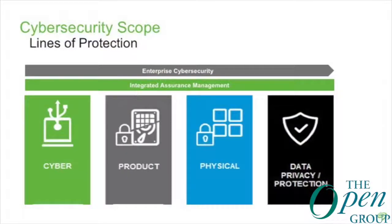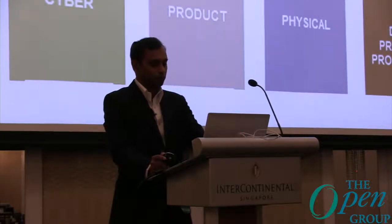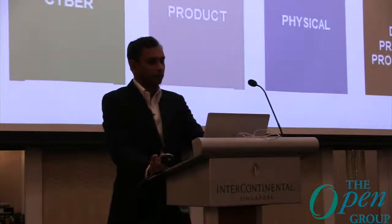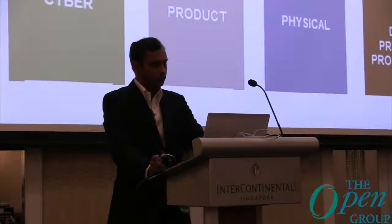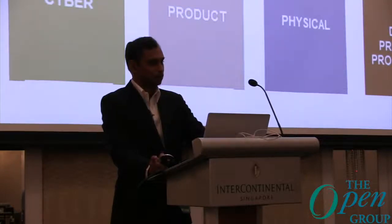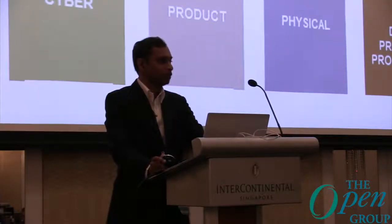To tackle this growing data challenge, we need to leverage enterprise security risk management spanning across four pillars: cyber, product, physical, and data privacy protection. Cyber and physical security are the top priority as they are the foundation for product resilience. With the advent of cyber-physical systems in the era of the edge, it is equally important to focus on protecting the product through risk management and security-by-design practices — something the previous speaker also mentioned.